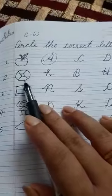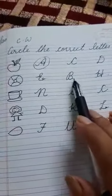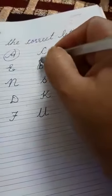Number 2, ball. Which letter will you circle? E for ball, B for ball, or H for ball? Letter B. B for ball.